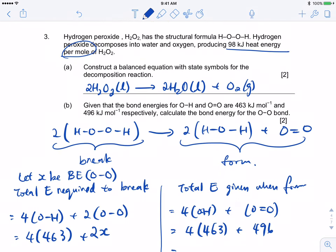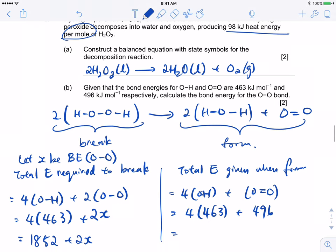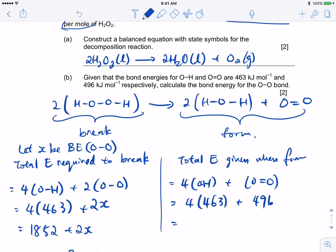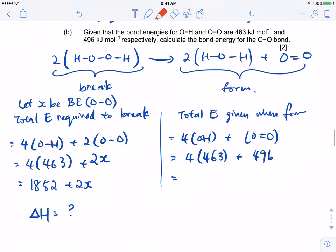Next, question 3. Hydrogen peroxide has this structural formula and it decomposes into water and oxygen providing 98 kilojoules of heat energy per mole of H2O2. Most of you can write this equation seeing that they already told you what are the products. The use of state symbols is required for this question. Most of you didn't get the state symbol for H2O2. Think that it's a liquid. Given that the bond energies are this and this, calculate the bond energy for the O-O single bond.